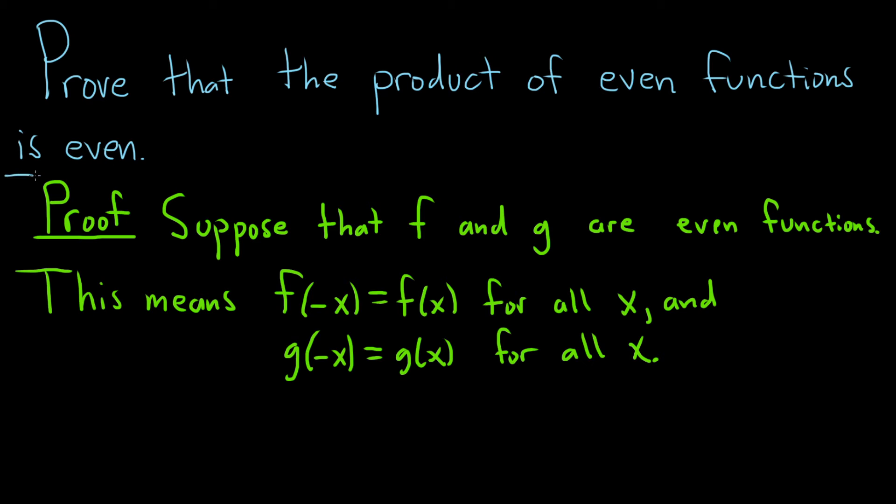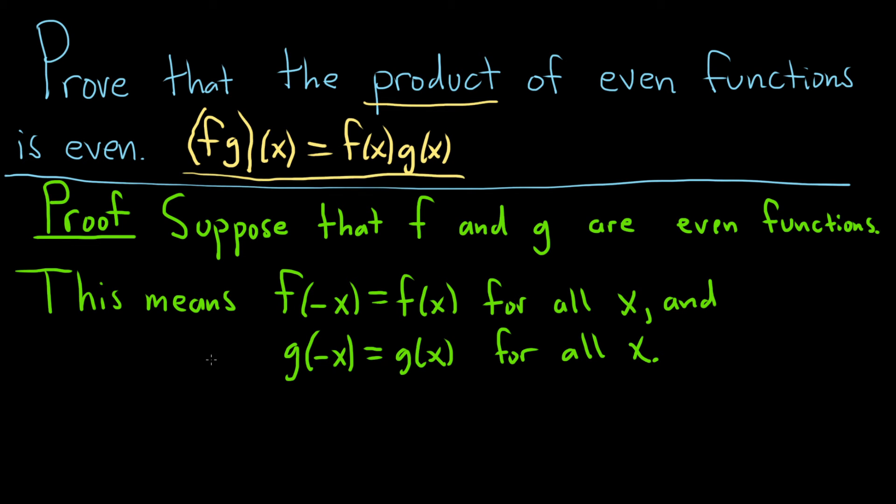Now we need to think about where we're going. We're trying to show the product is even. So what is the product? The product of two functions f and g is denoted by fg. And how is it defined? fg of an element x is defined as f of x times g of x. So you're just multiplying, but this is the actual notation you use for the product.